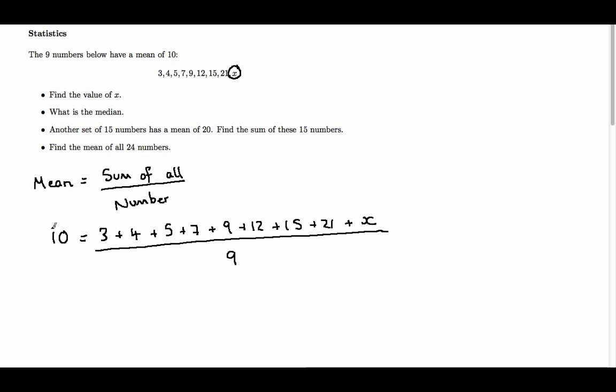So a bit of rearrangement tells us that 90, just taking this 9 from down here up to the top, is equal to, now 3 plus 4 plus 5, etc., up to 21, is 76. So we have 76 plus x. Therefore we see that x is 90 minus 76, which is 14. So the value of x is 14.